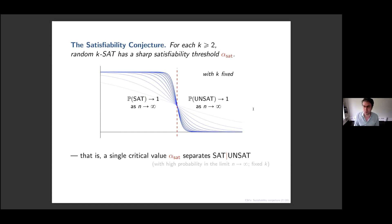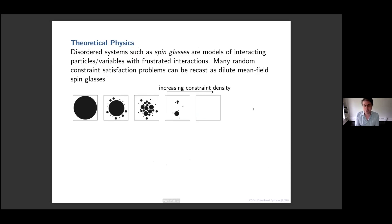For each of these models there's a prediction for where this threshold occurs. While these models were originally studied in combinatorics and theoretical computer science, the answers for how they should behave really came from theoretical physics — in particular the study of disordered systems such as spin glass models, and especially the work of Mézard and Parisi on the Sherrington-Kirkpatrick model.